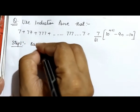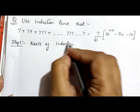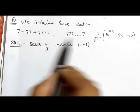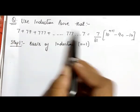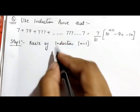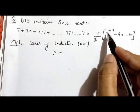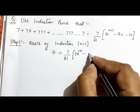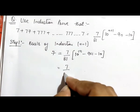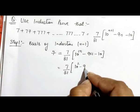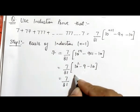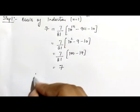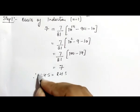As we already know, there are three steps for induction. Step 1 is the basis of induction. In this step, we put n = 1. On the left hand side, the series ends with 7, so the left hand side is 7. On the right hand side, we put n = 1, so it becomes 7/81 × (10^2 - 9 - 10), which gives 7/81 × (100 - 19), which equals 7. So the left hand side equals the right hand side.